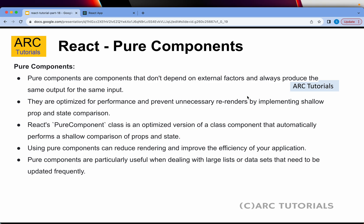Pure components are components that don't depend on external factors and will always produce the same output for the same input. In other words, pure components will always give the same output for a given input. For example, a method that adds two numbers — if you pass 2 and 2 as parameters, the output will always be 4.